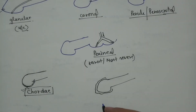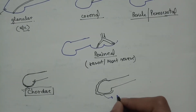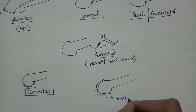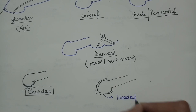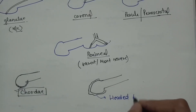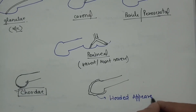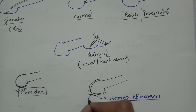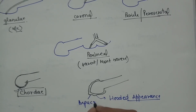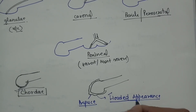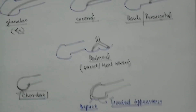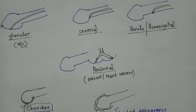In hypospadias, the prepuce (foreskin) is also not normally developed — the abnormal development gives the prepuce a hooded appearance. So hooded prepuce and chordee are two important features.